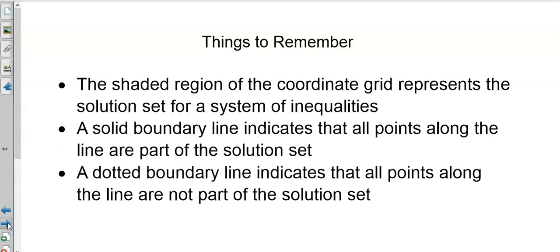Things to remember. The shaded region of the coordinate grid represents the solution set for a system of inequalities. A solid boundary line indicates that all points along the line are part of the solution set. And a dotted boundary line indicates that all points along the line are not part of the solution set.